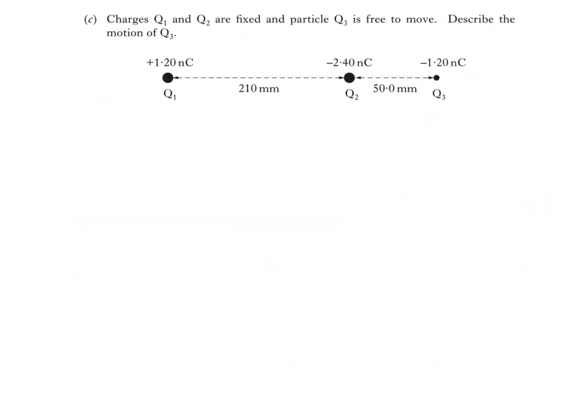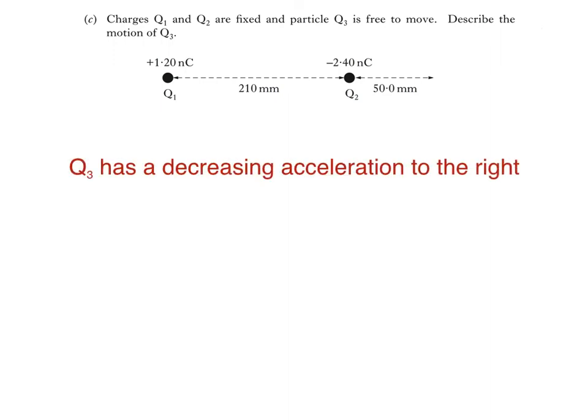Part C says charges Q1 and Q2 are fixed, and particle Q3 is free to move. Describe the motion of Q3. What happens is this. Q3 experiences an unbalanced force to the right, so of course it accelerates to the right. As it does this, the distance between Q3 and the other charges increases, so the unbalanced force acting on Q3 will decrease, causing the acceleration to decrease. So Q3 has a decreasing acceleration to the right.